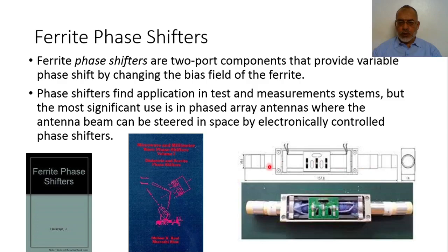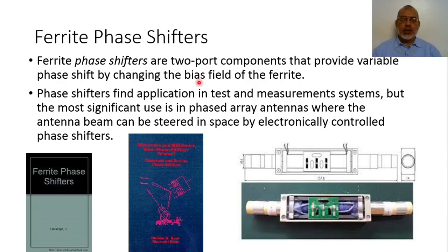The ferrite phase shifter is a two-port network that provides a variable phase shift by changing the biasing magnetic field. This biasing magnetic field can be controlled by controlling the electric current in a coil around the ferrite material. So ferrite phase shifters are two-port components that provide variable phase shift by changing the bias field. They are very important in many applications, especially in phased array applications.